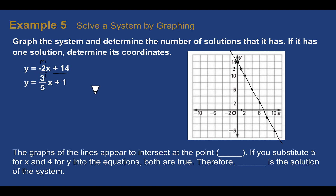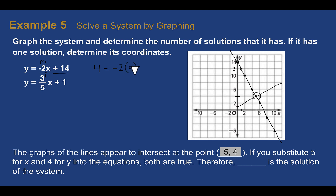We can check by plugging that coordinate in for x and y in the equations. Plugging in x equals 5 and y equals 4: negative 2 times 5 is negative 10, plus 14 is 4 — that works. For the second equation: three-fifths of 5 is 3, plus 1 is 4 — also works. So 5, 4 is the solution to this system.